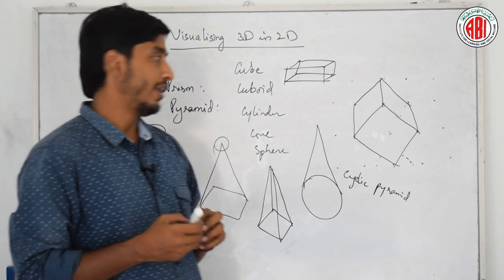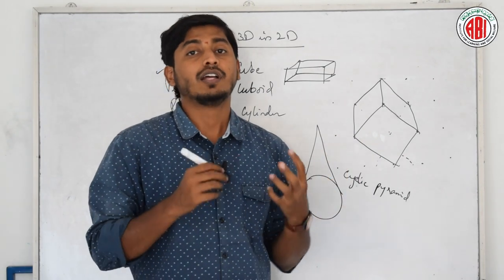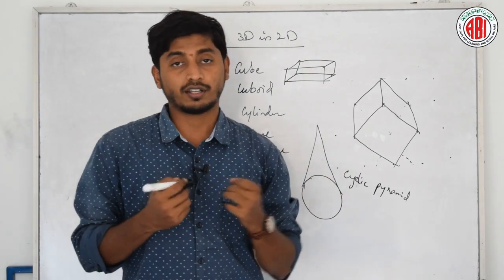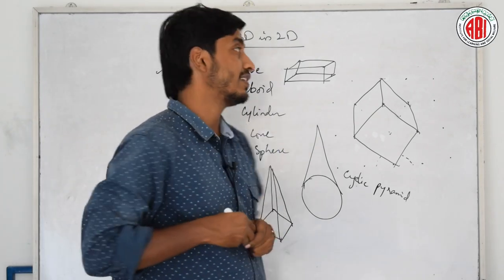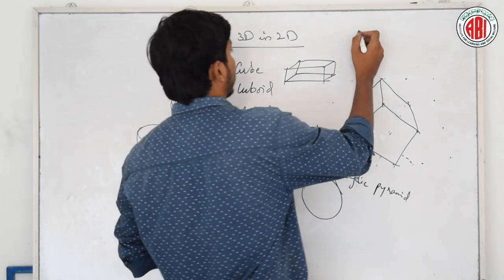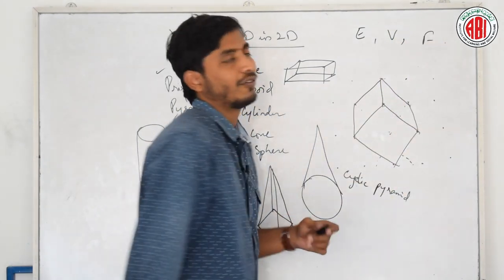These are all different shapes which we can represent in a simple dotted graph. And not only that, for every 3D object, we have to represent in terms of 2D. What are the main concepts or the different terminologies? Here you have to remember E, V, F.